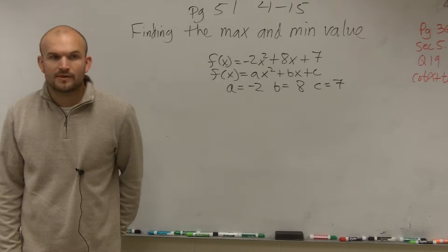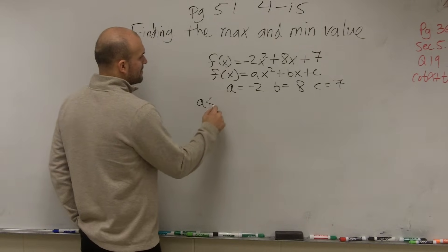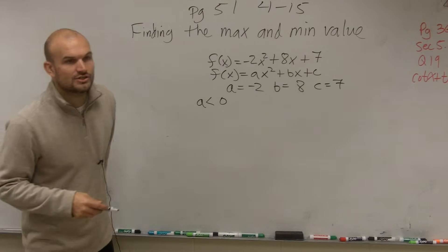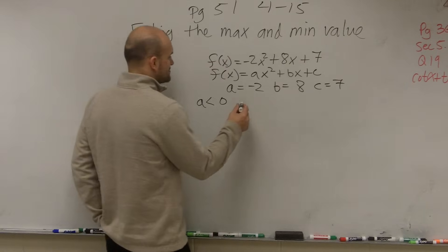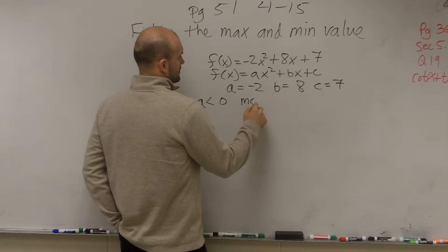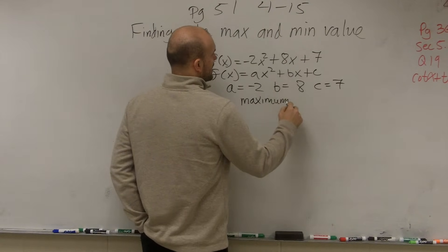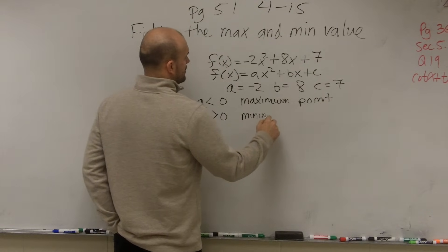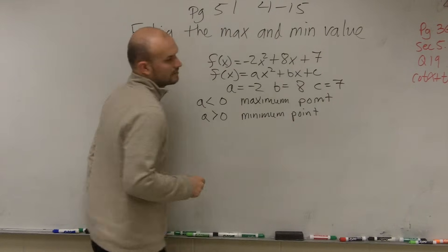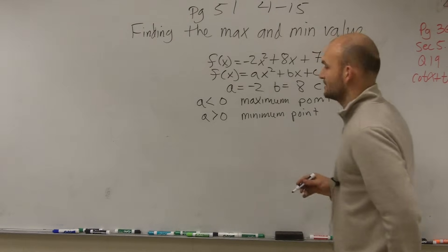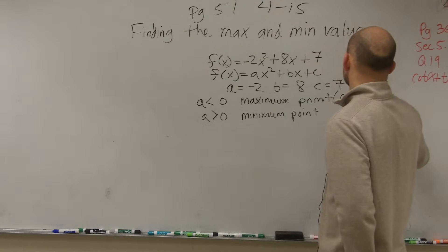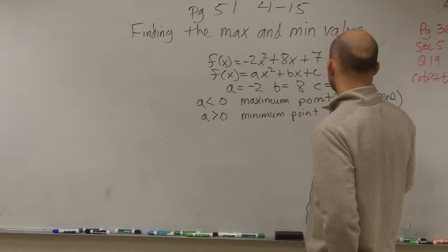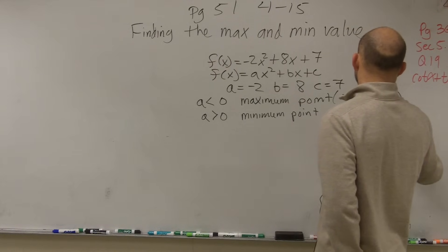So to determine if we have a max or a minimum, there's a test. If a is less than 0, then you're going to have a maximum point. If a is greater than 0, that means you're going to have a minimum point.